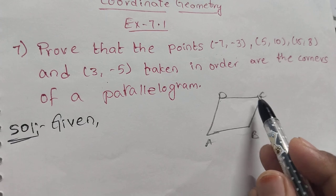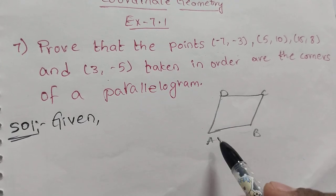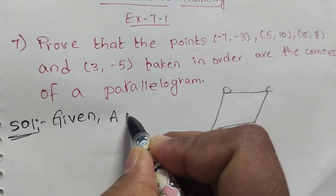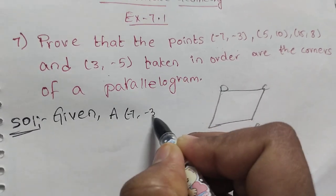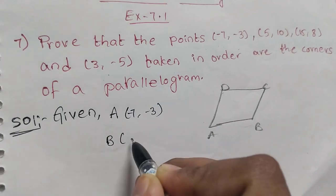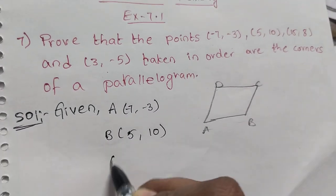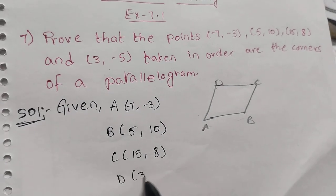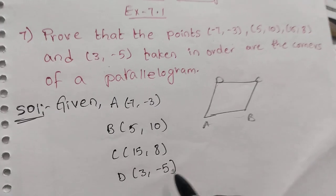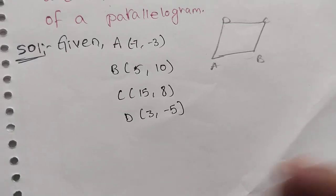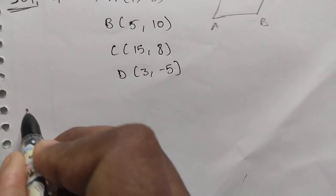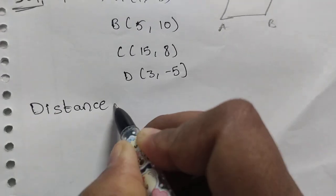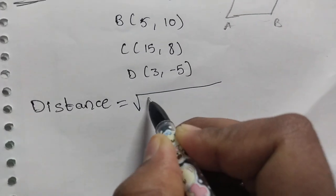We will take points A, B, C, D forming a parallelogram. The given points are: A(-7, -3), B(5, 10), C(15, 8), and D(3, -5). We already have the distance formula: distance = √((x2 - x1)² + (y2 - y1)²).